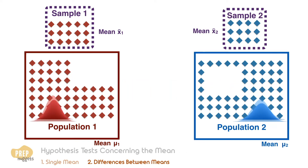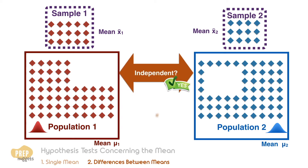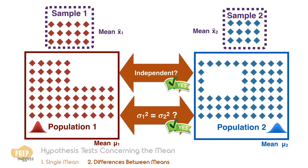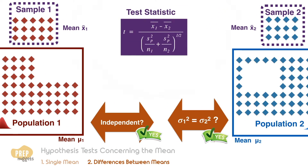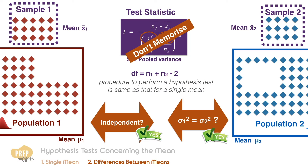The first thing you need to know is if the two populations are independent from each other. If they are independent, we need to determine if their variances can be assumed to be equal. If they are, we can use a t-test where we estimate a pooled estimator of the common variance. The t-statistic is computed using sp squared, which is the pooled variance — an estimator of the common variance. You're not expected to memorize these formulae. The degrees of freedom for this t-distribution is the sample size N1 plus N2 minus 2.